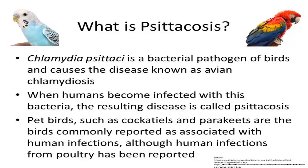While many types of birds can be infected with Chlamydia psittaci, the types of birds commonly reported as associated with infection in humans are pet birds such as cockatiels and parakeets. However, human illness associated with poultry and other types of birds has also been documented.